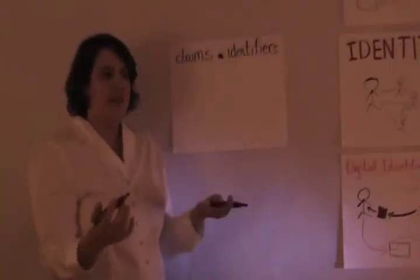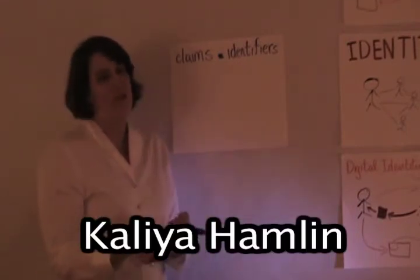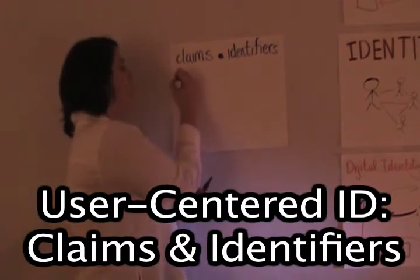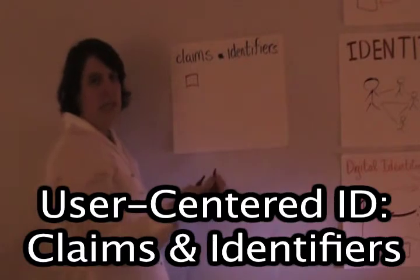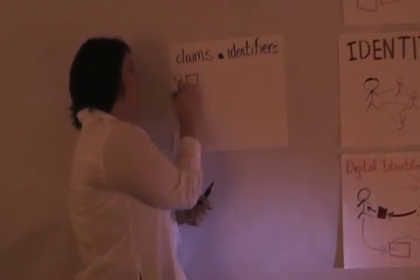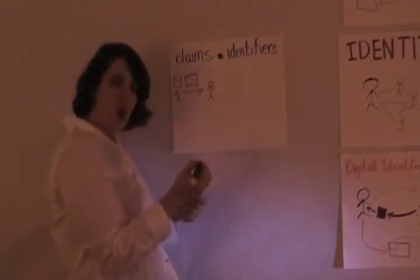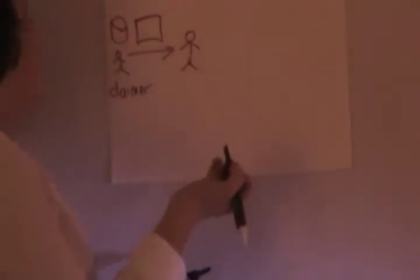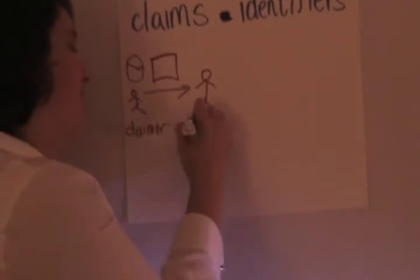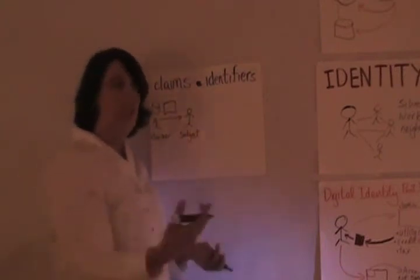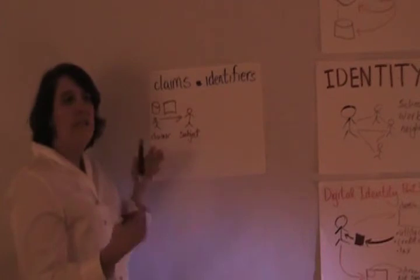We just talked about two different ways that people use digital identities, and it's important to clarify them very specifically. One was a claim — a claim is an assertion by one entity, an organization or a person, about another one. It has two pieces: a claimer and a subject — the subject the claim is about. You can make claims about yourself, such as claiming you live in the East Bay or that you're a woman. We can make self-assertions, and we can also have people or institutions make claims about us.